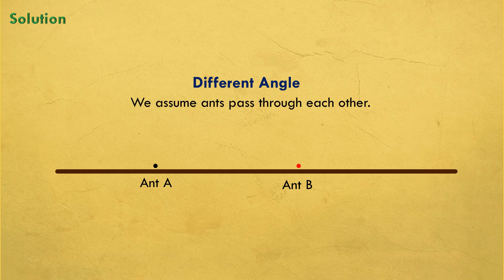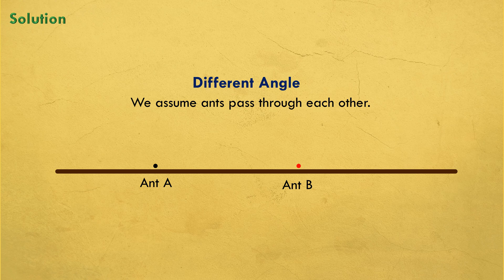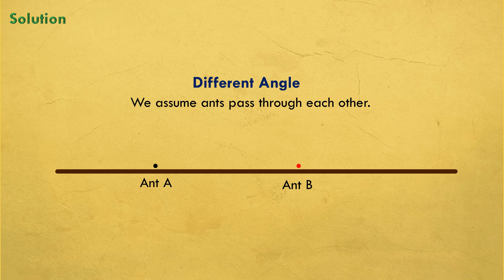After the collision, one ant is going to go to one direction while the other to the opposite direction anyway. We can do this because we said the ants are very small, dot-like.